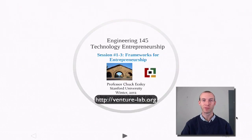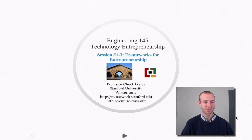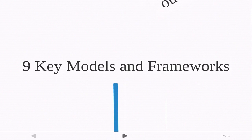In this third video for E145 Technology Entrepreneurship, I'll be talking about some frameworks for thinking about the entrepreneurial process. I'll be presenting you with nine different key models and frameworks. And like any framework or model, these are all imperfect representations of the real world, but they all emphasize one aspect or the other of entrepreneurship. During the rest of the course, I'd like you to be thinking about how each of these models relates to entrepreneurship, and I'll be referring back to them throughout the course.